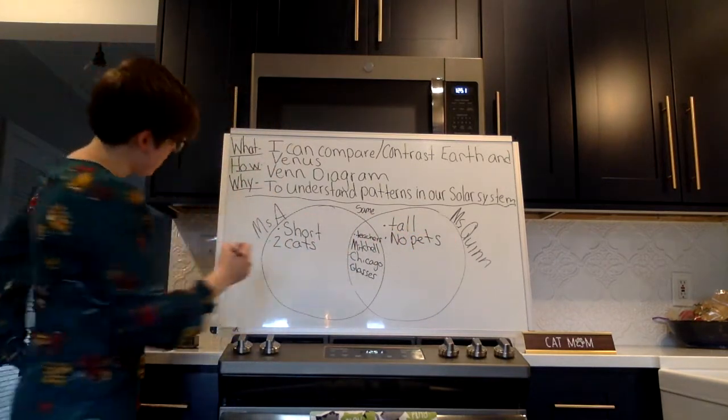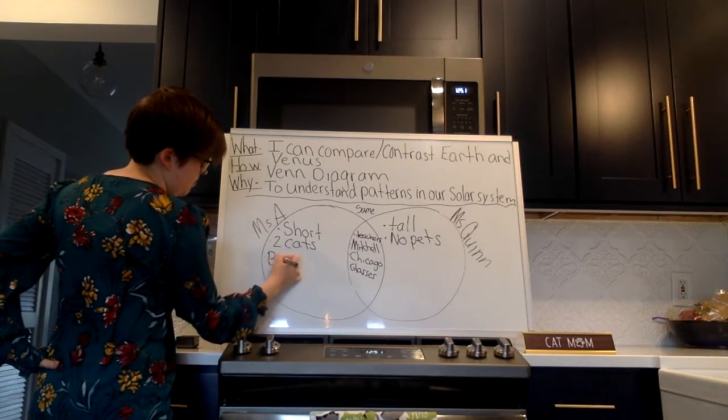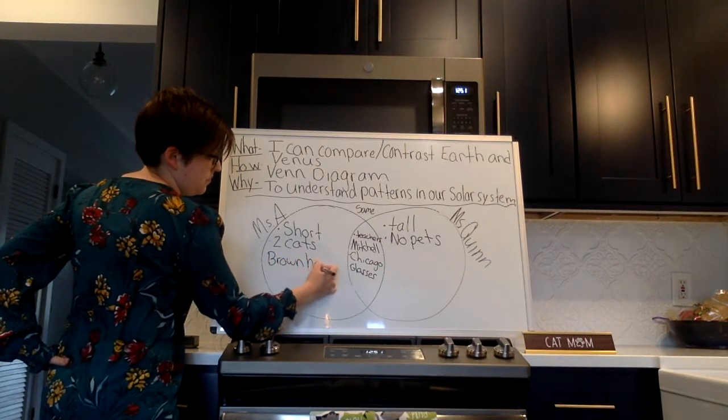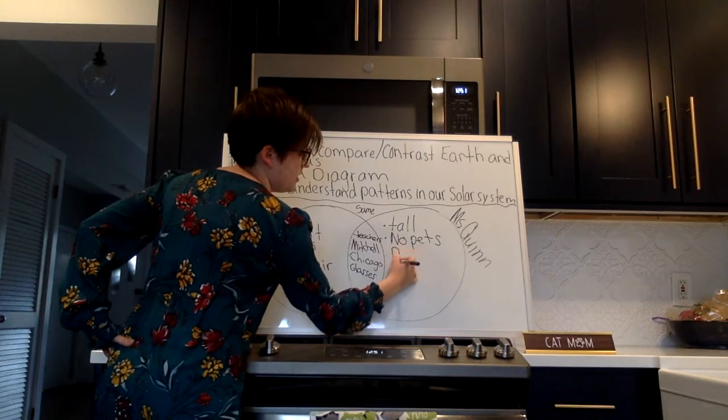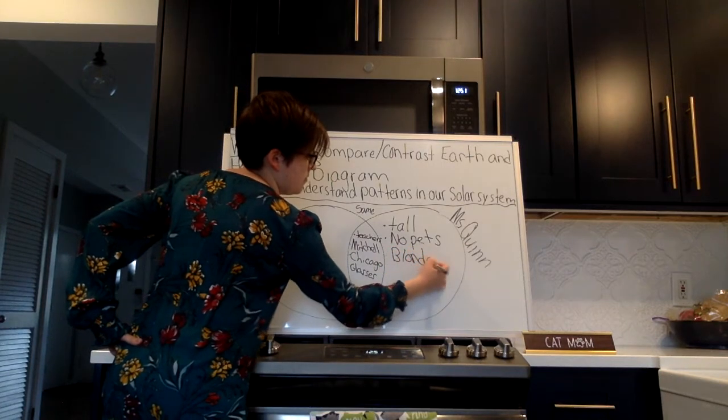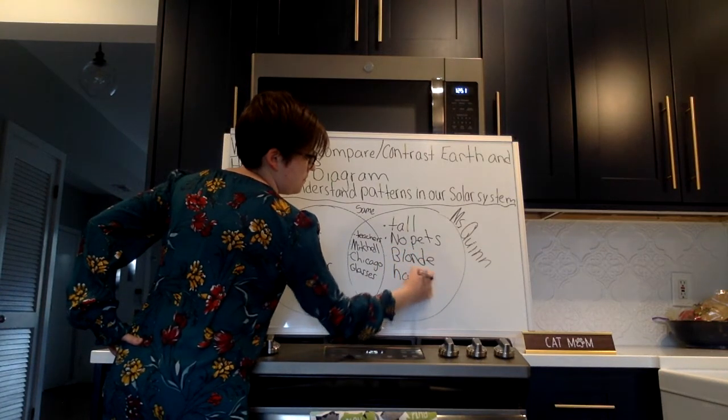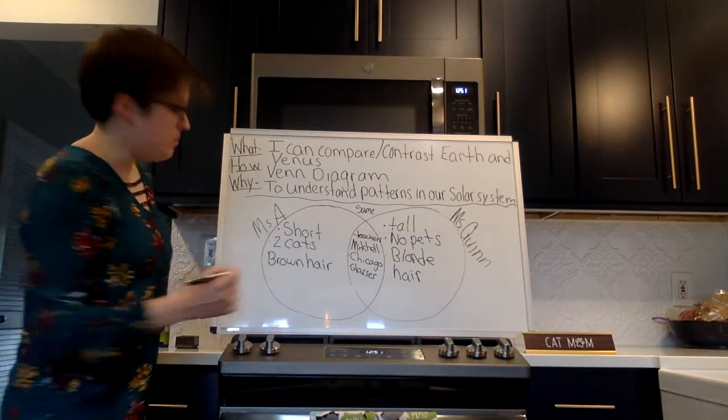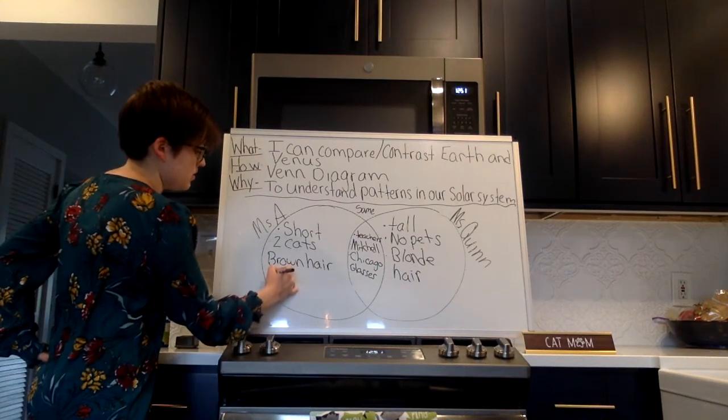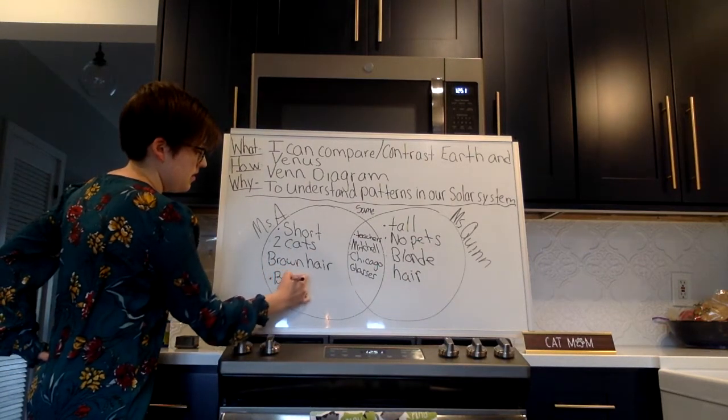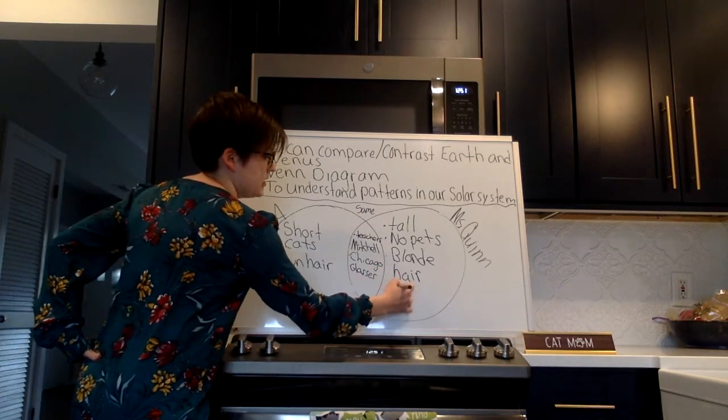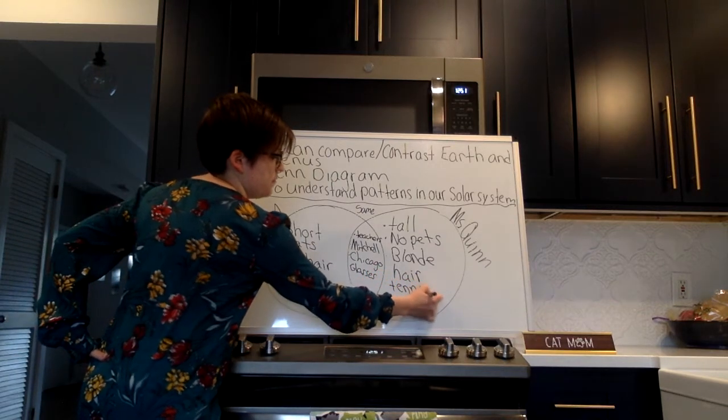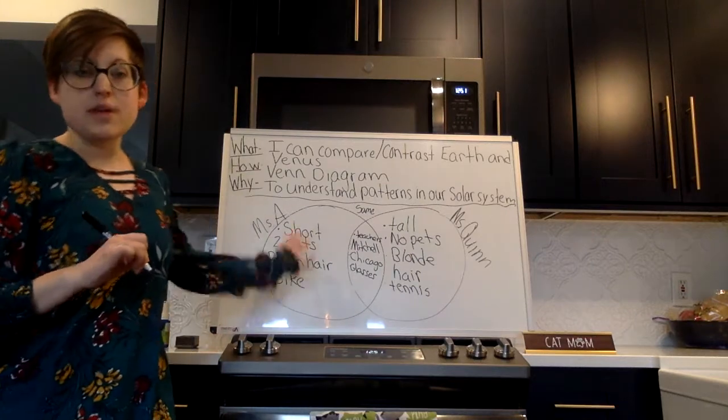Miss Arbuckle has brown hair and Miss Quinn has blonde hair. We could say Miss Arbuckle likes to ride her bike and Miss Quinn likes to play tennis. So these are just some of the things that we can compare and contrast between myself and Miss Quinn.